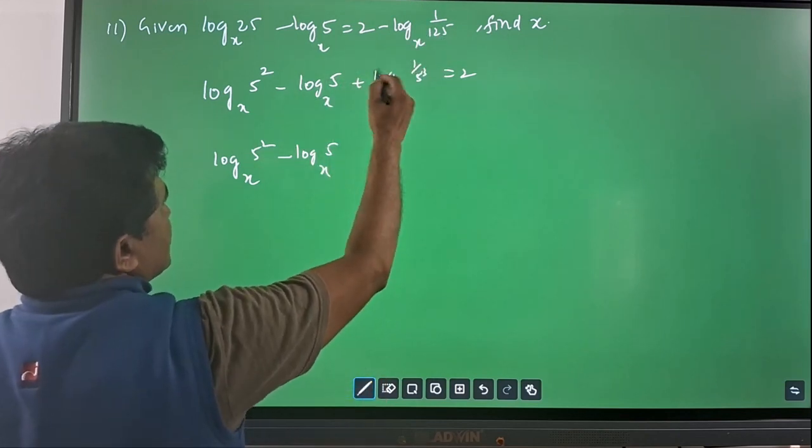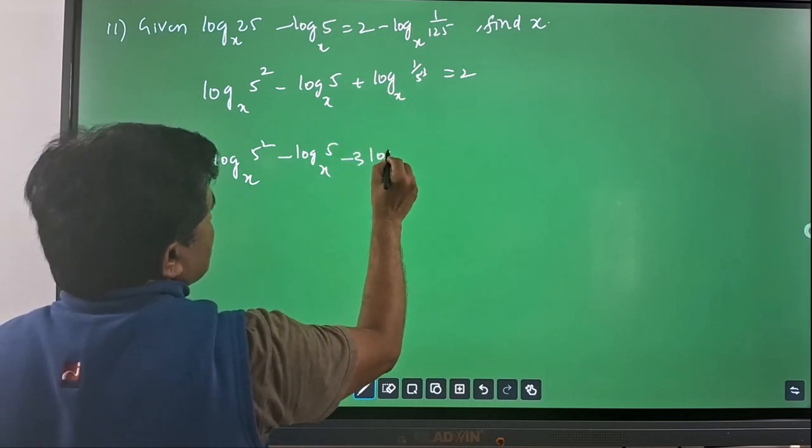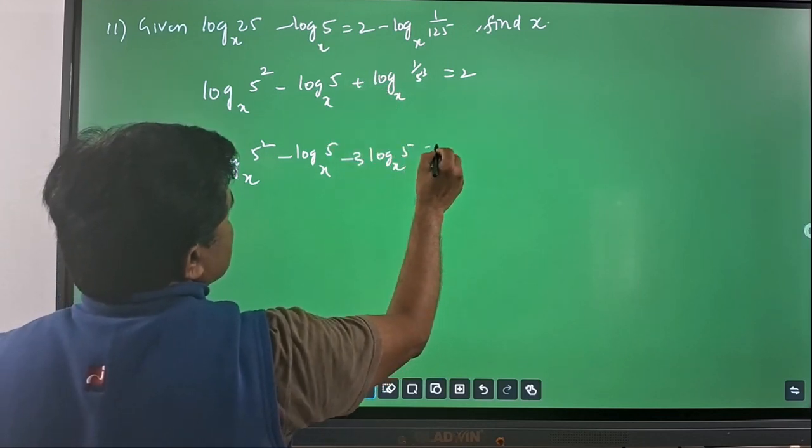So, that minus 3 will come to front like a coefficient. So, we will have minus 3 log 5 with base x, which is equal to 2.